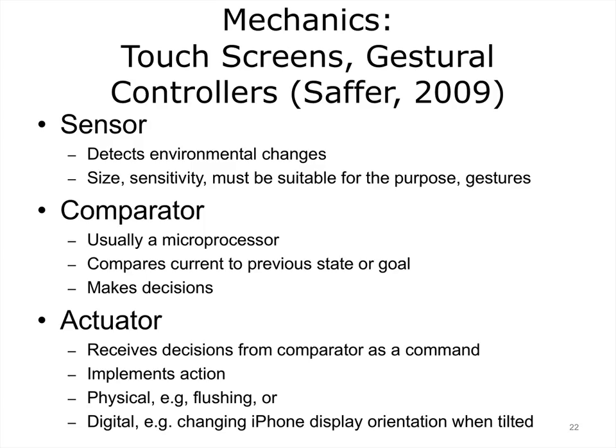All gestural interfaces have three parts: a sensor, a comparator, and an actuator, which can consist of a single physical component or multiple components. A sensor detects environmental changes or user actions such as a change in pressure, proximity, light, sound, tilt, motion, orientation of the device, or acceleration. The size and sensitivity of the sensor must be suitable for the purpose and context. For example, devices that use fingers to key in data must present buttons suitable to a range of finger sizes, and devices that use a clapping sound to turn lights on or off must accommodate a range of sound that is not so sensitive that it picks up noises of daily living.